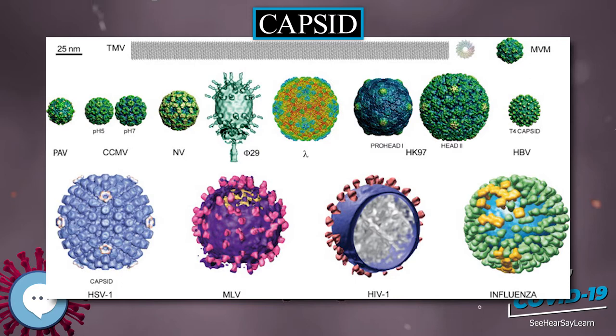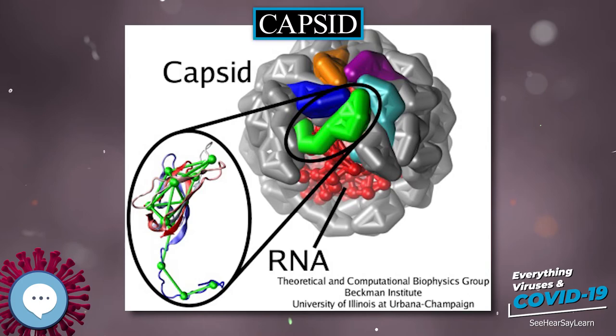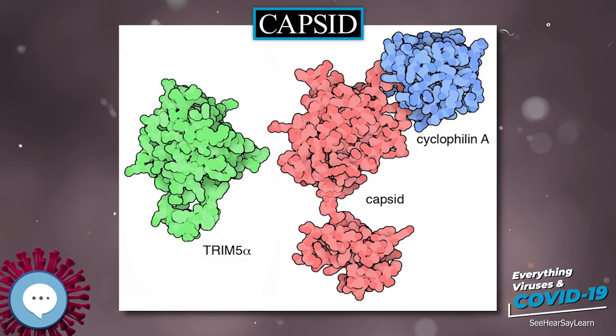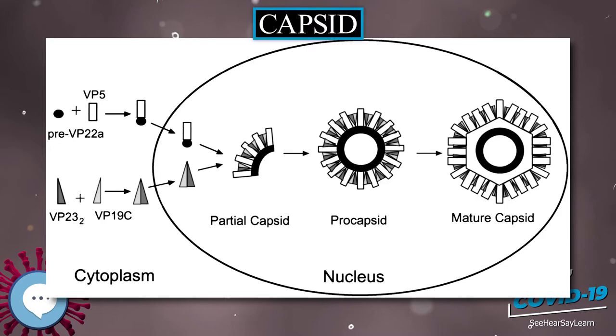Some viruses are enveloped, meaning that the capsid is coated with a lipid membrane known as the viral envelope. The envelope is acquired by the capsid from an intracellular membrane in the virus host. Examples include the internuclear membrane, the Golgi membrane, and the cell's outer membrane.